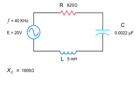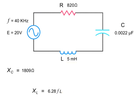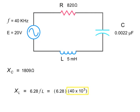To calculate the inductive reactance, multiply 6.28 by the frequency, by the inductance of the inductor. Thus, 6.28 times 40 kilohertz times 5 millihenries equals 1,257 ohms.